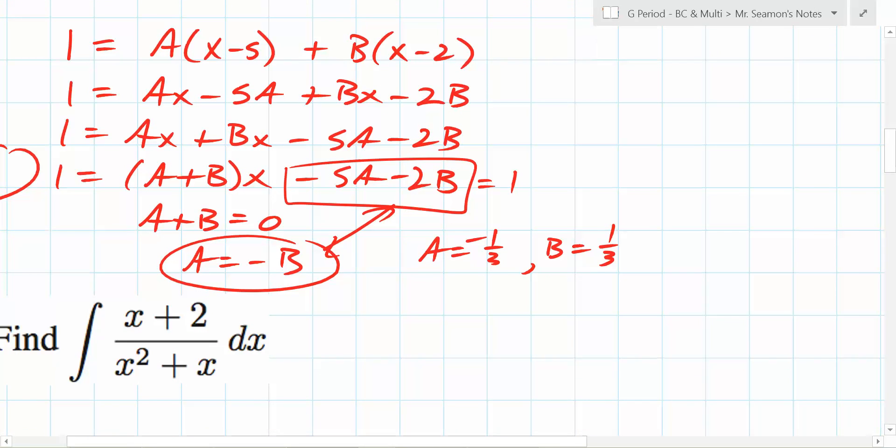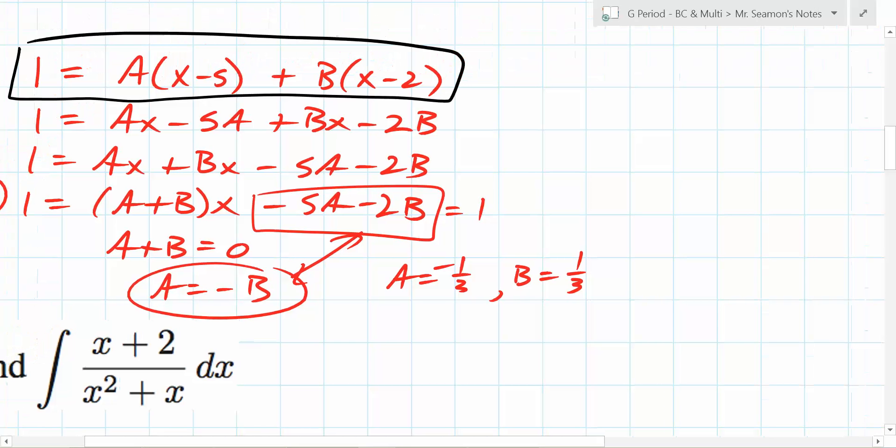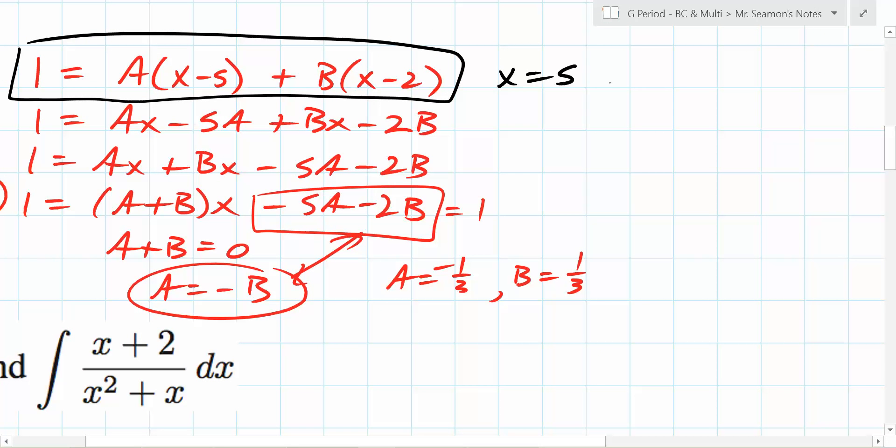This process right here is totally awesome. There's absolutely nothing wrong with it. There is a kind of a cheating method. Let me show you the cheating method. That statement right there needs to be true for all x values, correct? So let's pick some magic x values. What about x equals 5? What does that tell you? 1 equals B times 3, so B is one third. x equals 2? 1 equals A times negative 3, so A is negative one third.